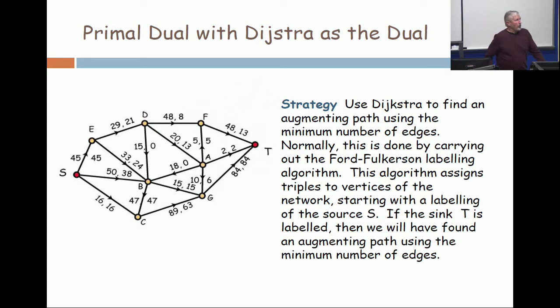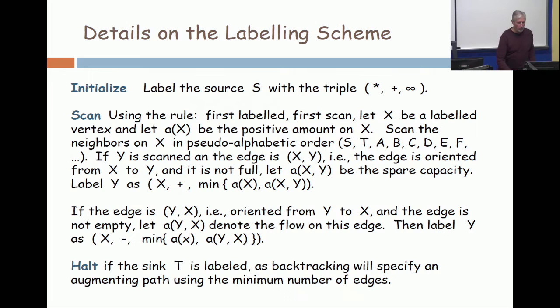What our algorithm is going to do is assign triples to vertices. It's going to label some vertices. The algorithm will halt if we ever label the sink, because when we label the sink, we will have found an augmenting path. Now let's put a few more details in.